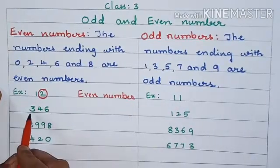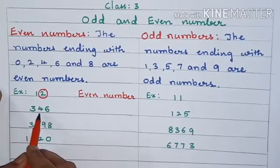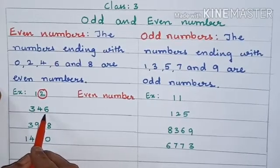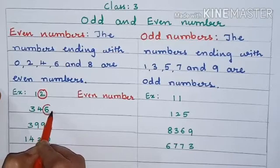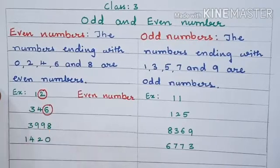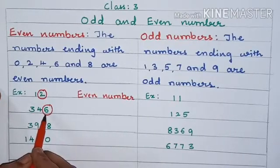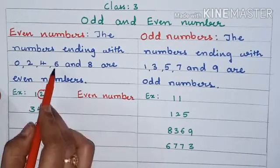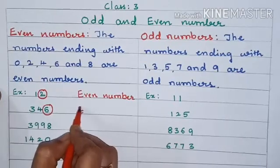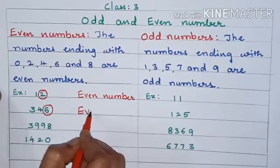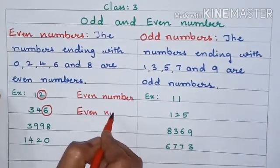We will take another example: 346. So what is your last digit? 6. So 6 is an even number. So 346 is also an even number.